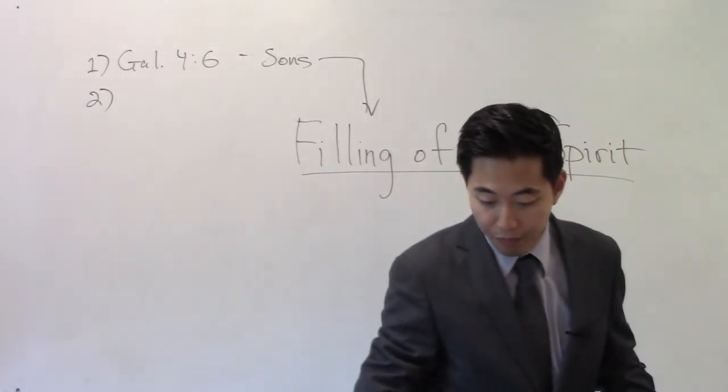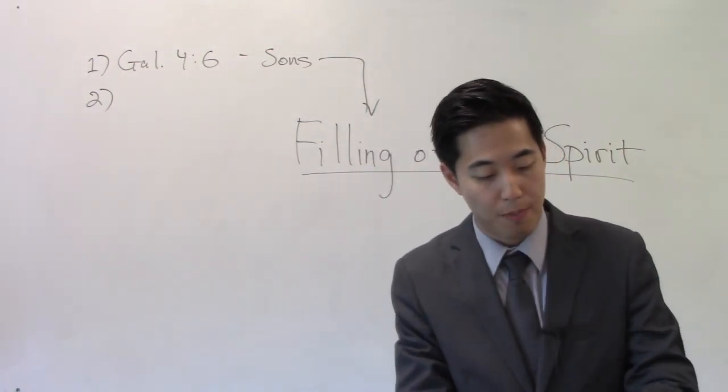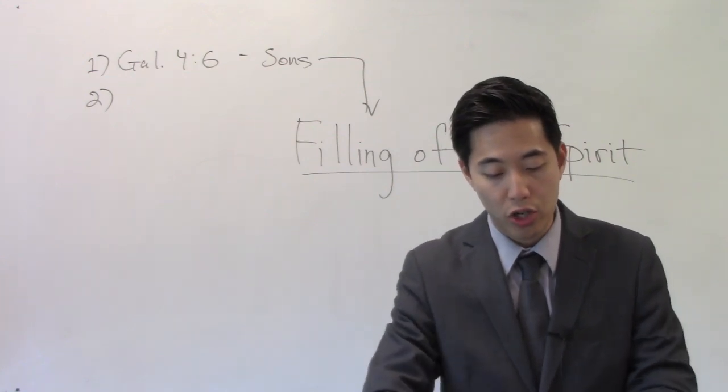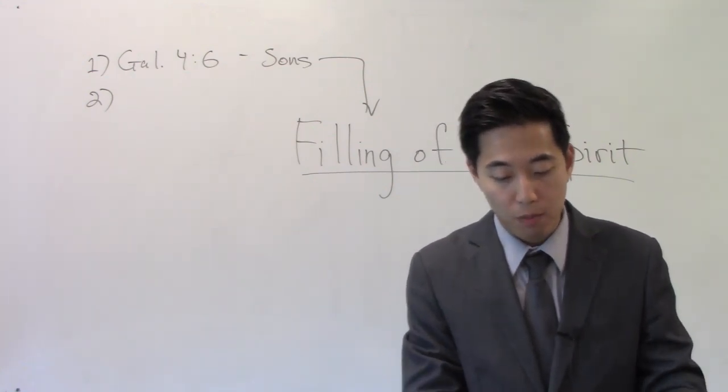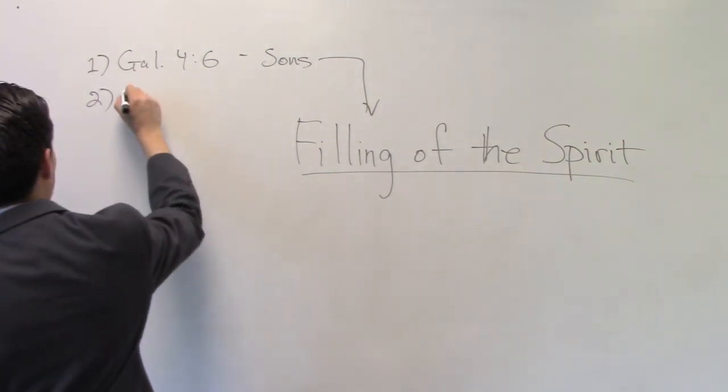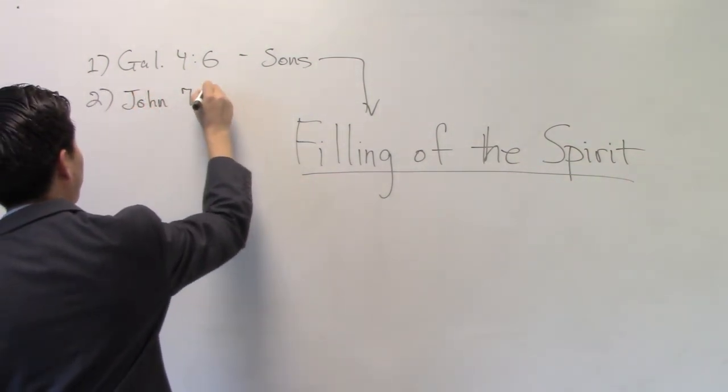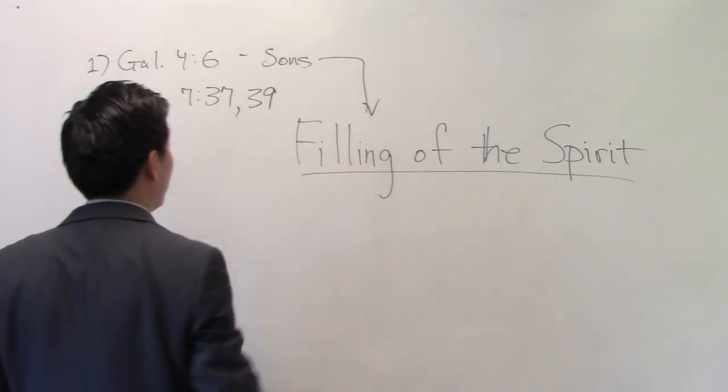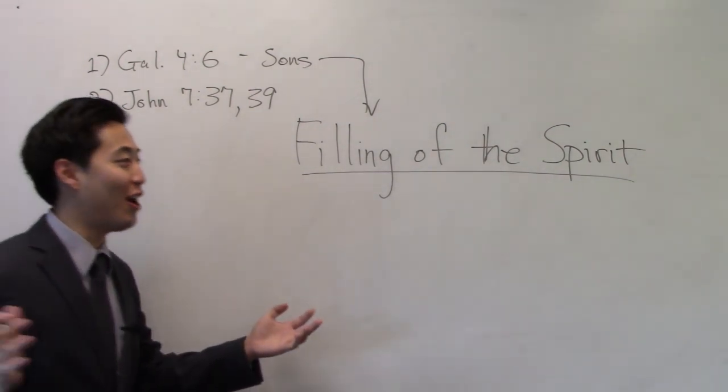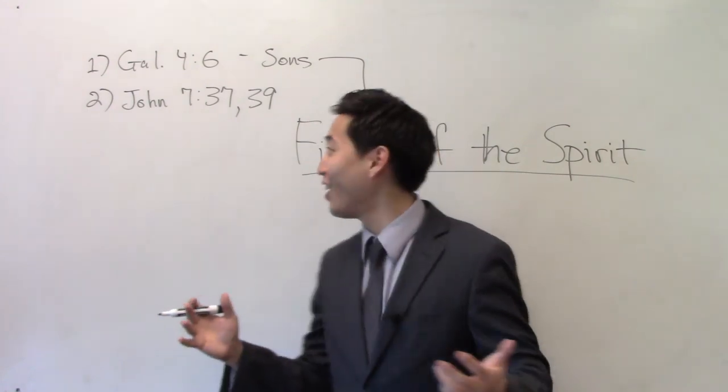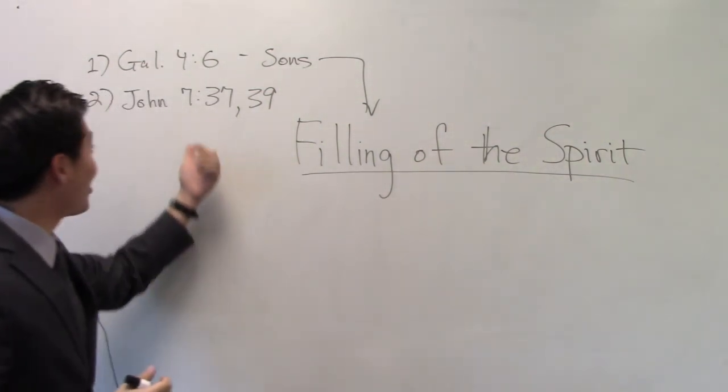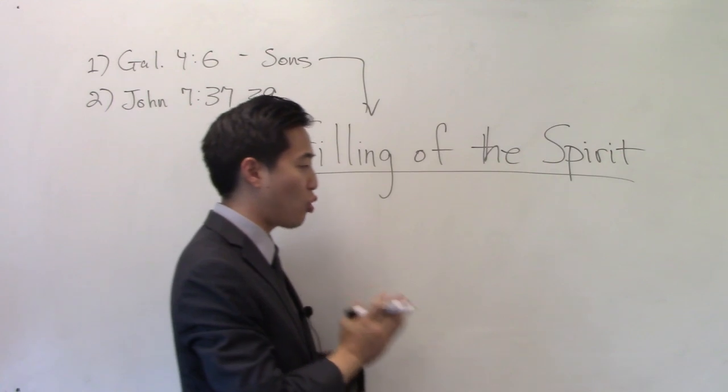All right. The second thing. You should have a strong desire. Look at John chapter 7. And once you go to John chapter 7, I want you to bookmark that. All right. I want you to bookmark that so we can go back here. I'm going to turn to John chapter 7. And we will read verse 37 through 39. We're going to look at John chapter 7 and verse 37 and verse 39. You have to have a strong desire.